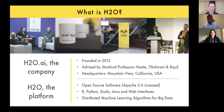H2O is open source under Apache 2.0 — the most liberal license — meaning you can build on top of it and use it in your business however you want. It's all written in Java, but there are interfaces in R, Python, and Scala. There's also a web interface for people who don't want to write code.